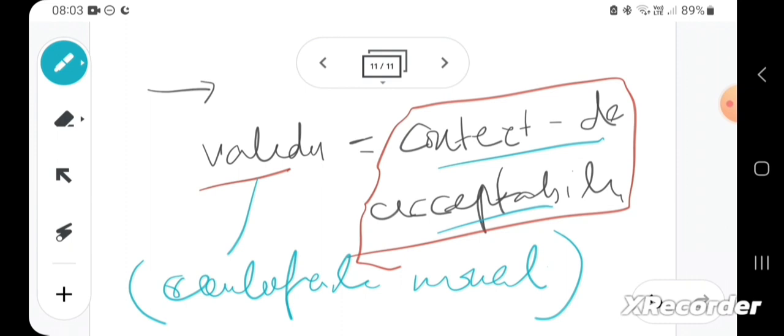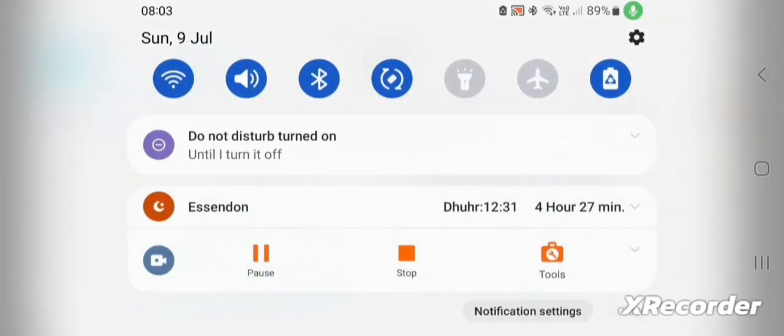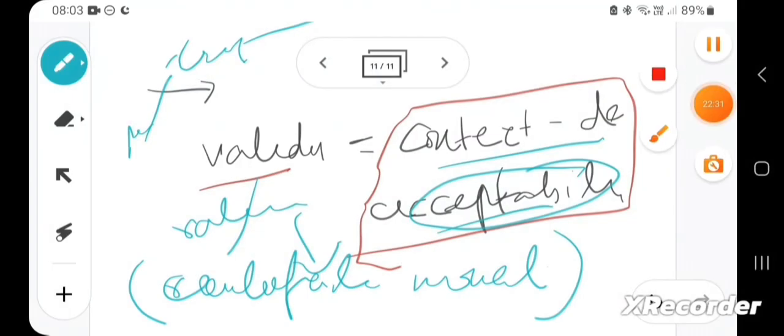So even when we accept something based on context-dependence, if that acceptability is rational, rationally motivated, that counterfactual moment is always there, which can be potentially triggered to question that acceptability. That's what Habermas is saying, I think.